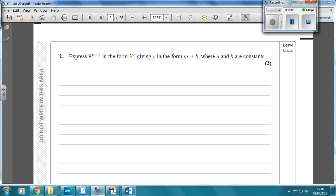Okay, so on question 2, the thing that people get wrong on this question is that they can't find the link between 9 and 3, because if it's in the form 9 to the power of 3x plus 1, and we've got to write that as 3 to the power of something, which in this case is 3 to the power of y.